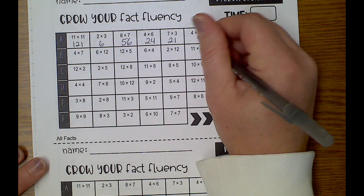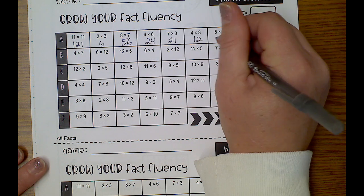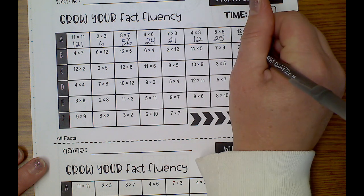7 times 3 is 21. 4 times 3 is 12. 5 times 5 is 25. 12 times 6 is 72.